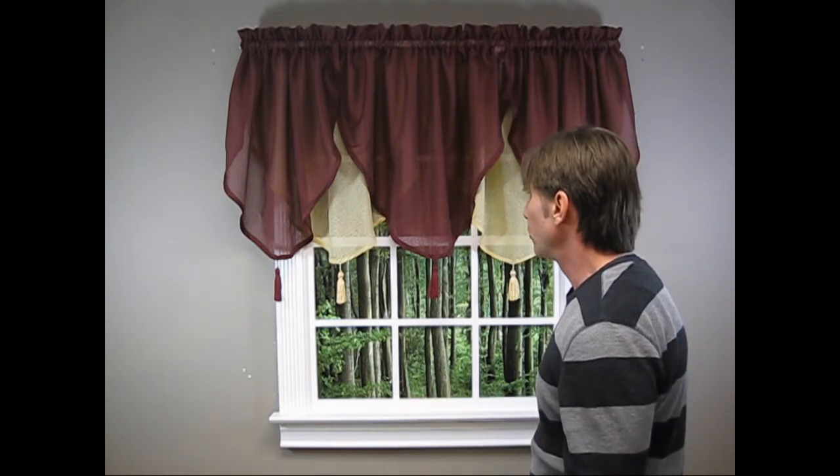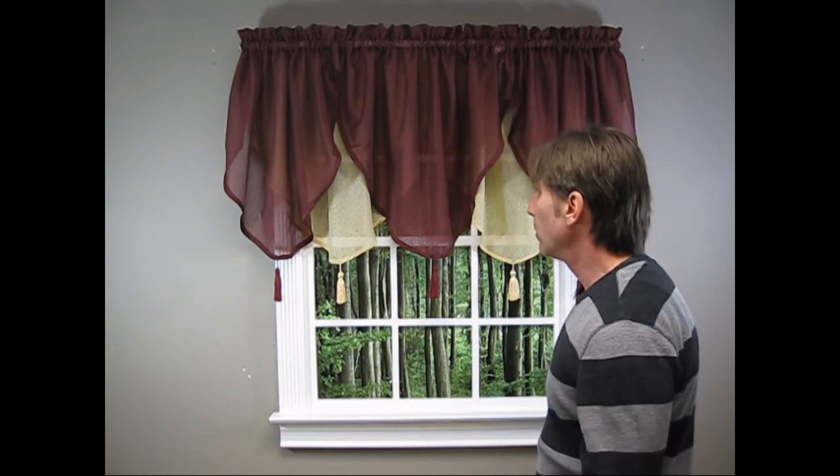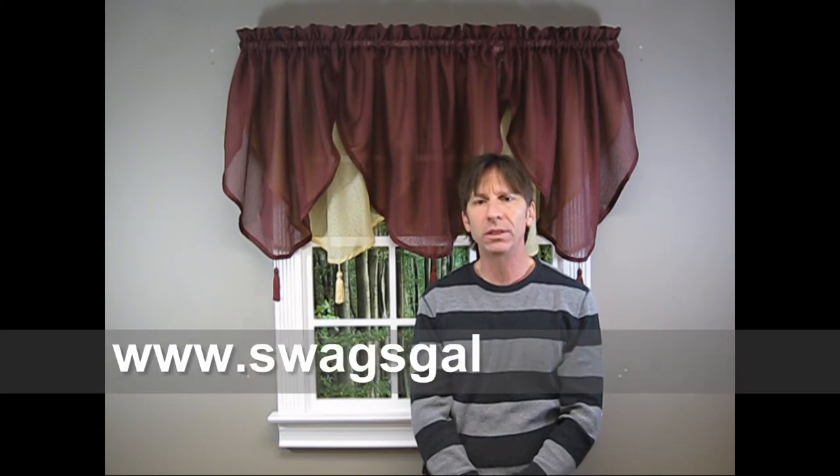Well, that does it for this instructional video. I hope it was helpful in showing you just how easy it is to install ascot valances on a double curtain rod to create a layered look. If there's a valance you would like me to do a video on, or if you have a question about any of the products we offer at swagsgalore.com, please add a comment on YouTube or email me at customerservice@swagsgalore.com. Until next time, this is Gene saying goodbye and stay tuned for more exciting instructional window treatment videos. See ya!